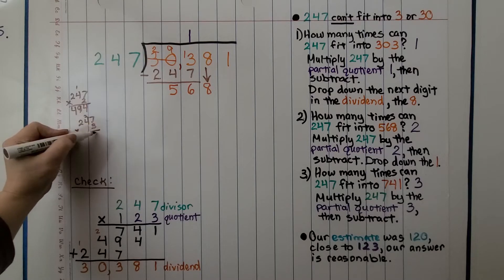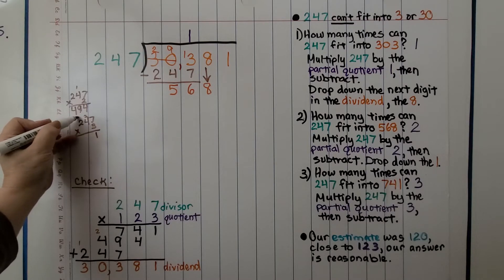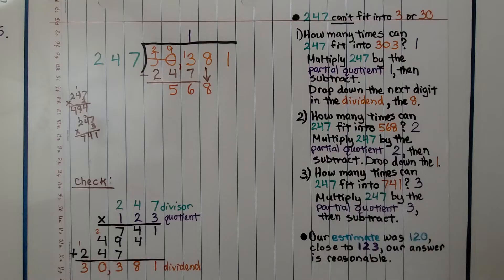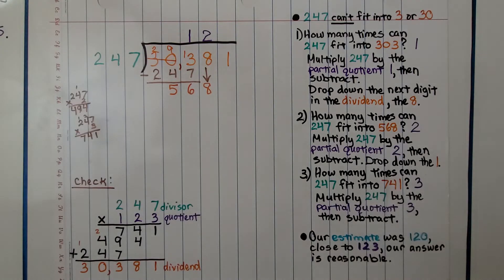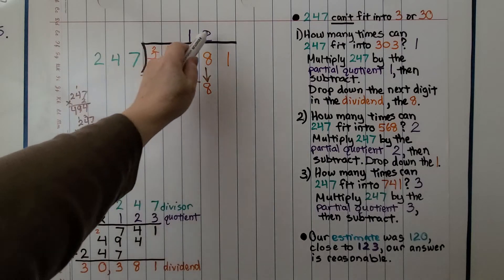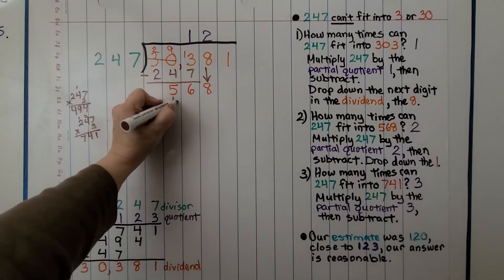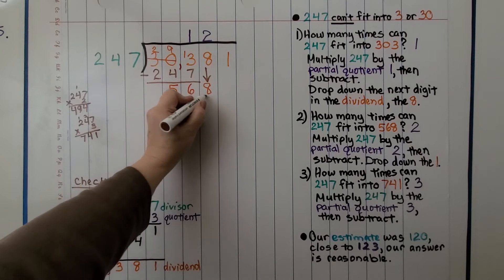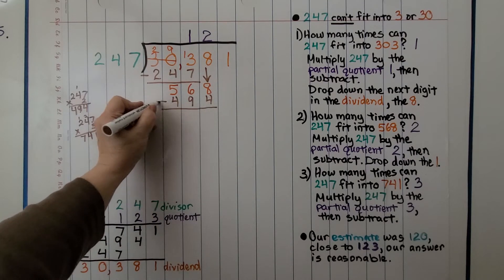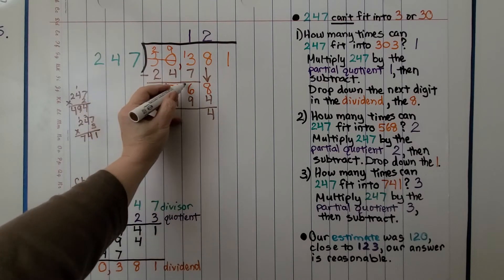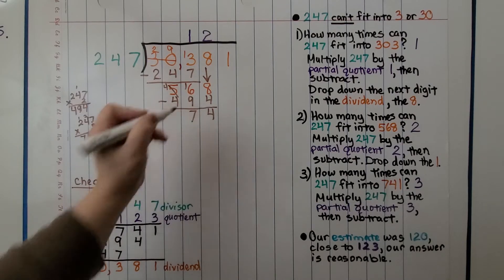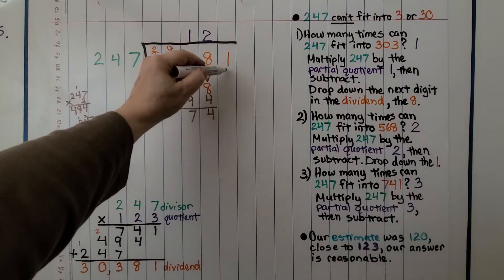So we're going to have to go with the 2. That's going to be the next part of our quotient, above the 8 that we dropped down. Now we know that 247 times 2 is 494. We can subtract that. 8 minus 4 is 4. We rename the 6 to a 4 and make that a 16. And now it's the 1's turn to come down.